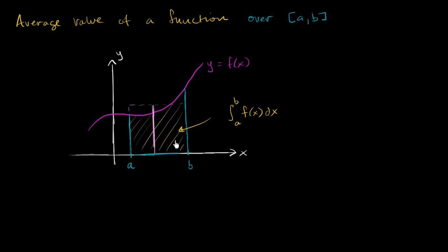Which is a reasonable way — if you remember when you even think about finding the area, or one way to think about the area of a trapezoid: if you have a trapezoid like this, you could kind of turn it 90 degrees, but you multiply the height times the average width of the trapezoid, and that gives you its area.